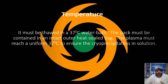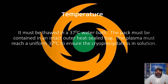In relation to temperature surrounding cryoprecipitate, it must be thawed at 37 degrees in a water bath, as far as transfusion practices are concerned. There are now more sophisticated water baths that can thaw out cryoprecipitate or fresh frozen plasma much more quickly. The pack must be contained in an intact outer heat-sealed bag, and the plasma or cryoprecipitate must reach 37 degrees to ensure it is in solution and can be used right away.